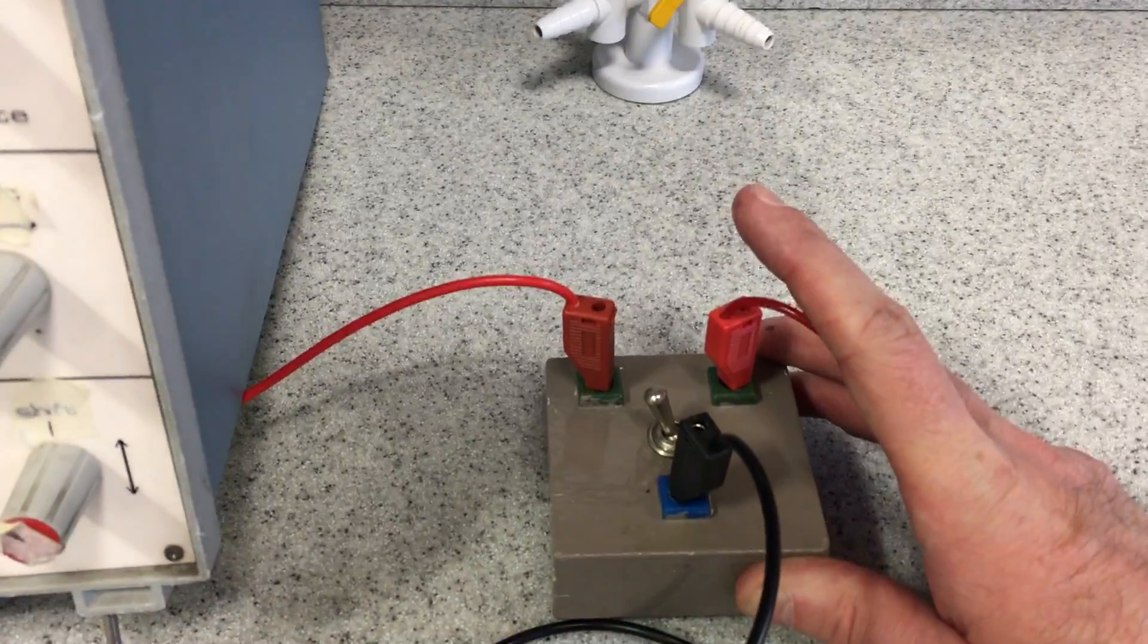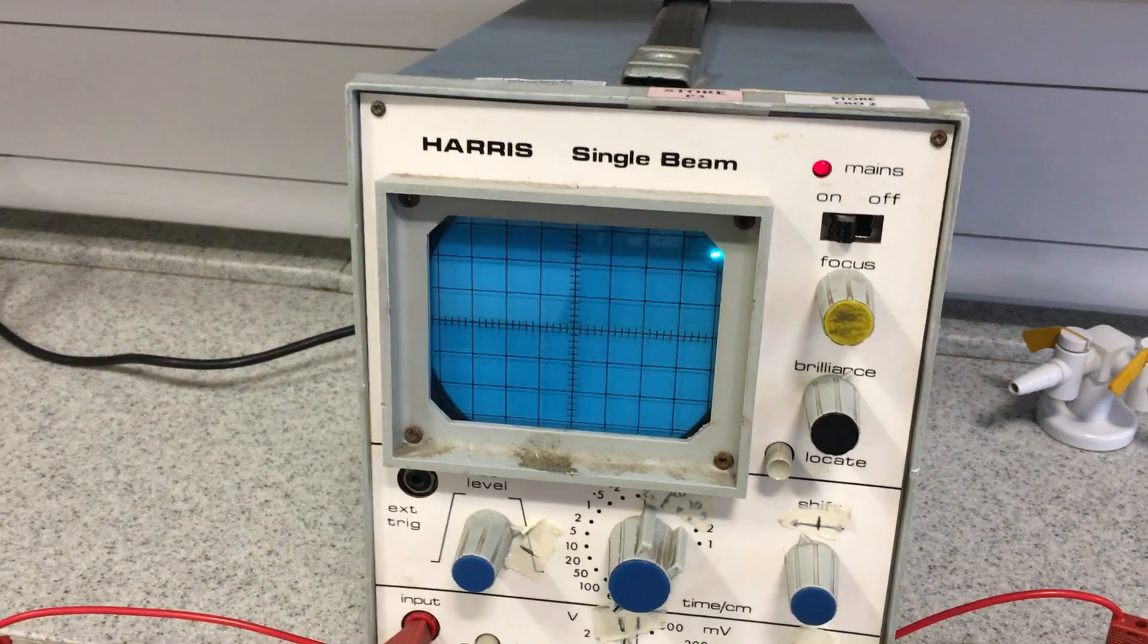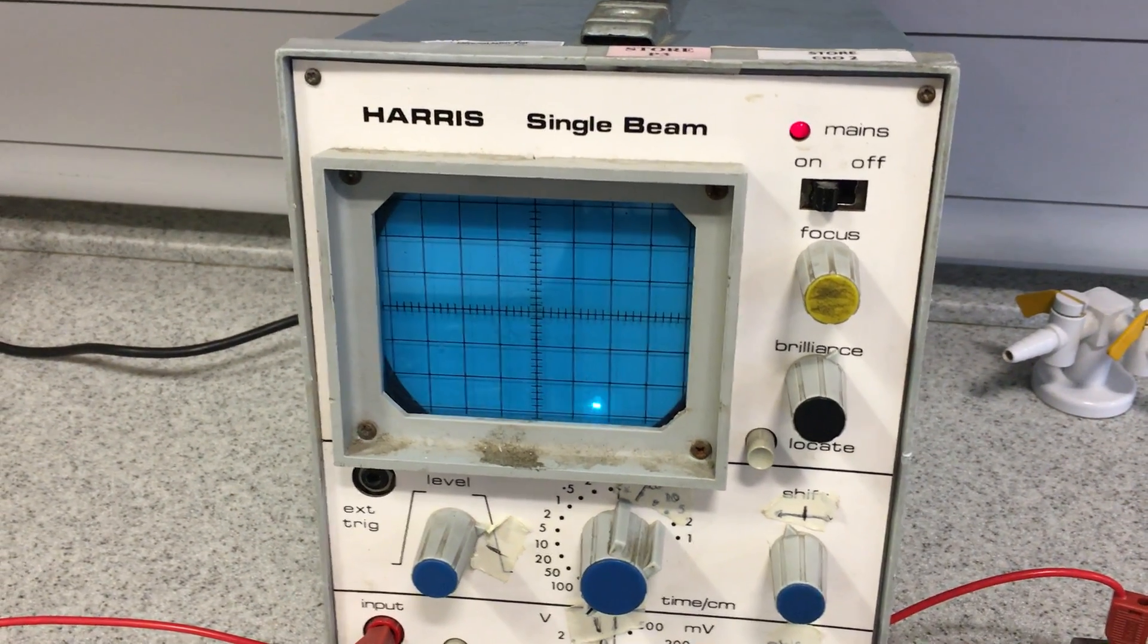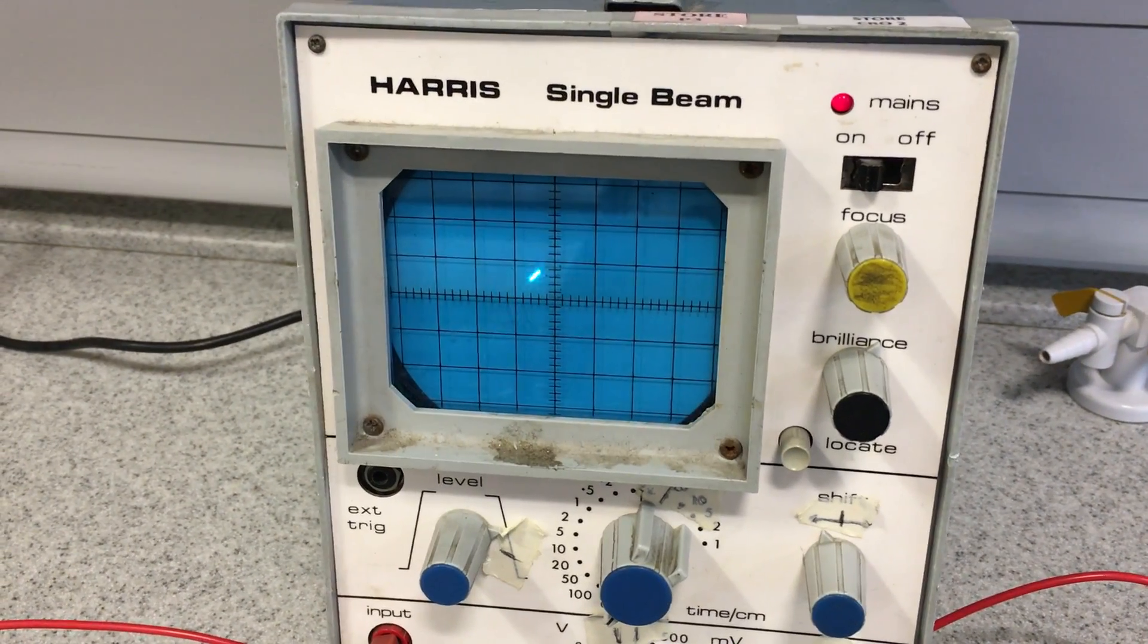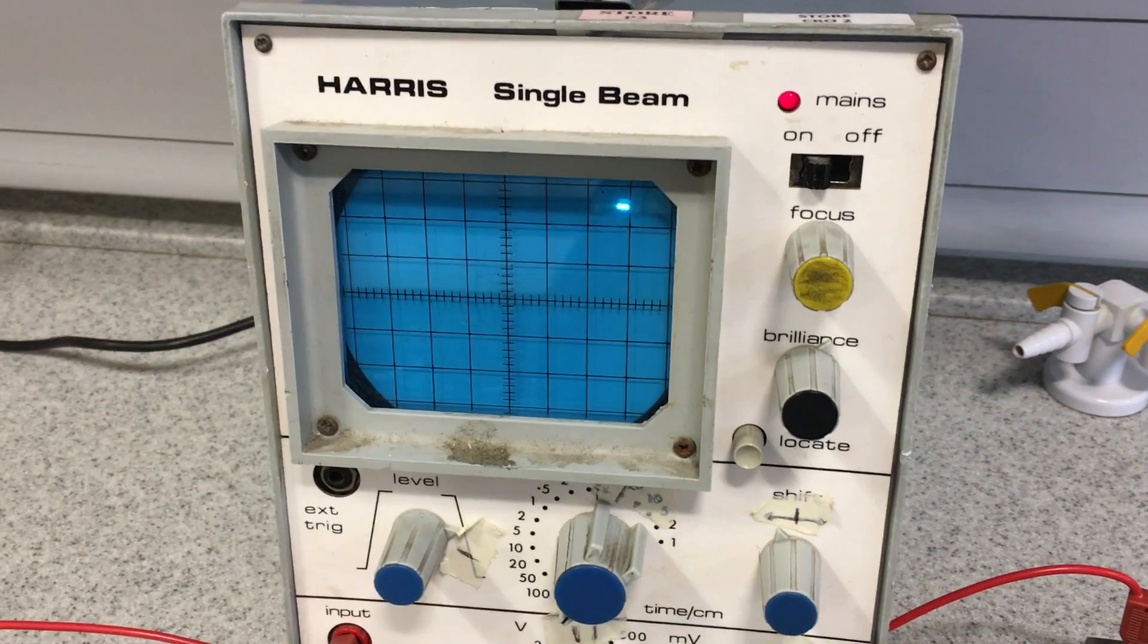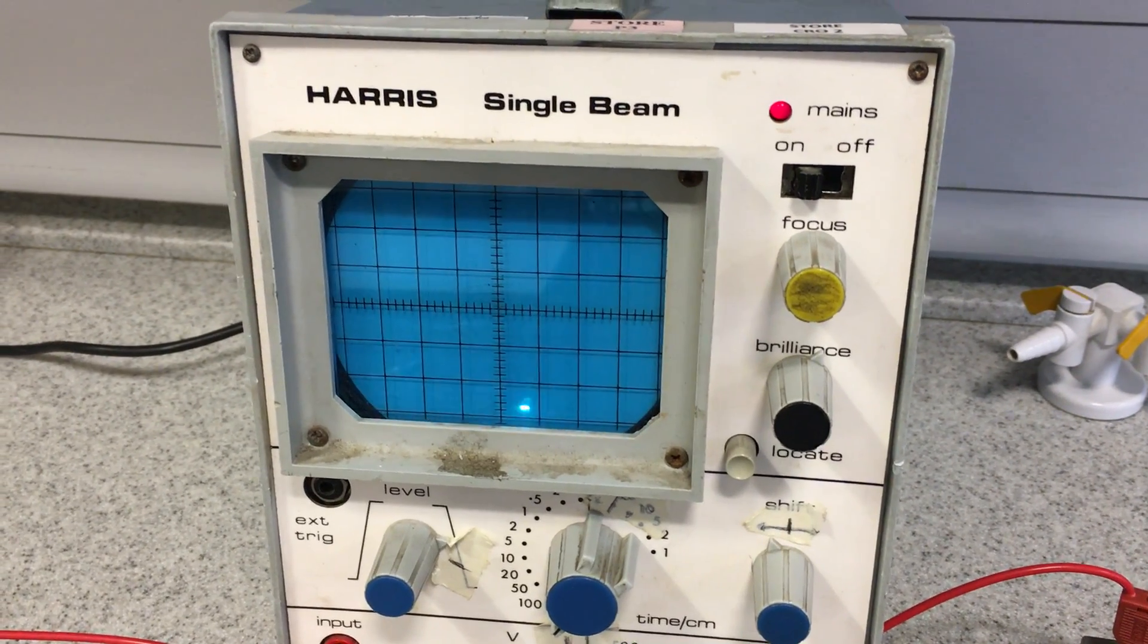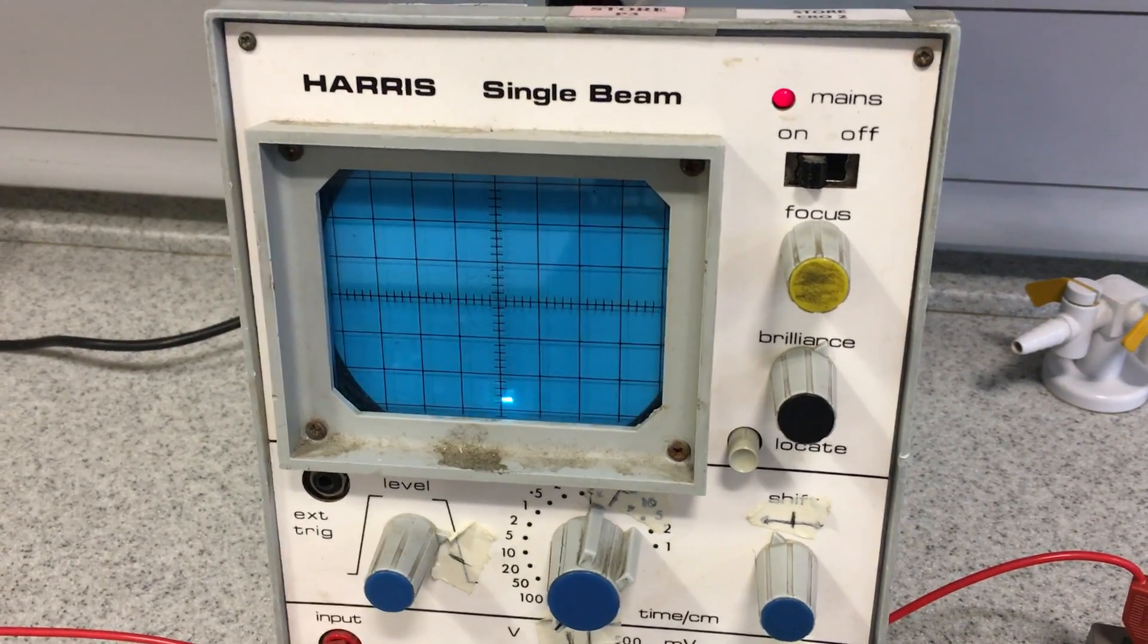I'm now going to empty it out by switching across to the right hand side. Watch the trace. I'm going to show charging and discharging. These are the voltage graphs. Charging. Discharging. Again.